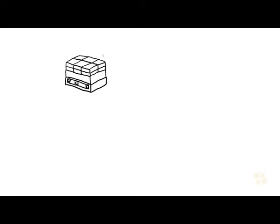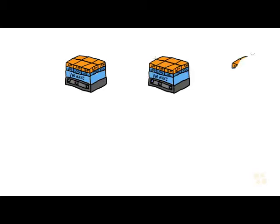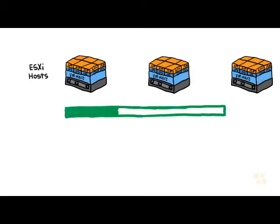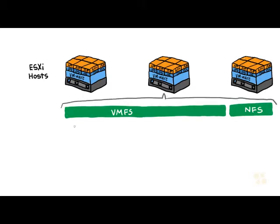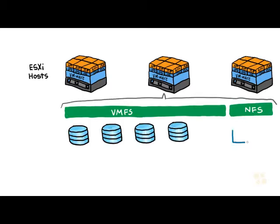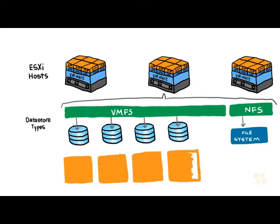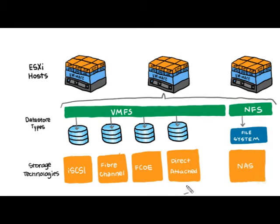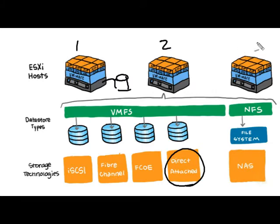When it comes to datastores, we have several options in a vSphere environment regarding where that datastore is. For example, it could be directly connected — a hard drive that is directly connected to an ESXi host that the ESXi host has set up and formatted with VMFS, and is now using that datastore for the storage of virtual machine files. That is certainly one option: a directly attached hard drive directly connected to the ESXi host.